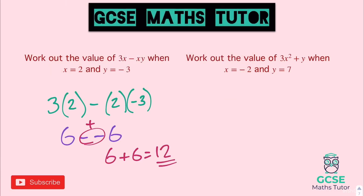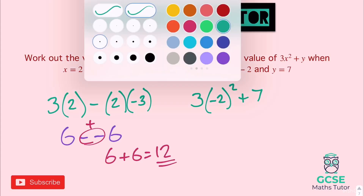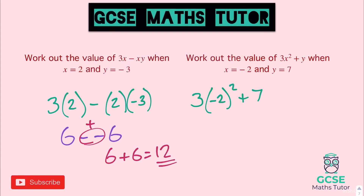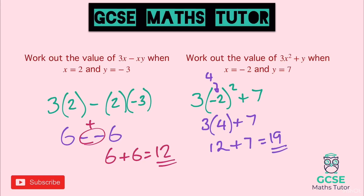For the second one with squares, we have 3 lots of x squared, so (negative 2) squared plus 7. Negative 2 squared is negative 2 times negative 2, which is 4. So we have 3 lots of 4 add 7 — that's 12 add 7, giving us the answer 19.